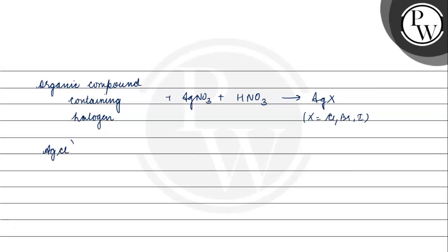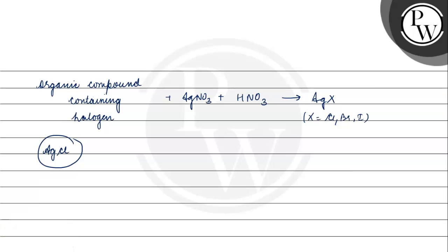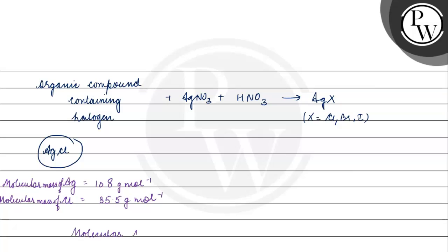If we have AgCl, then we will estimate how much chlorine is present in this compound. We know that Ag's molecular mass is 108 g/mol and chlorine is 35.5. So the molecular mass of AgCl is the sum of Ag and Cl, which comes out to be 143.5 g/mol. So we have 35.5 gram of chlorine per 143.5 gram of AgCl.